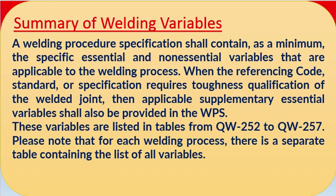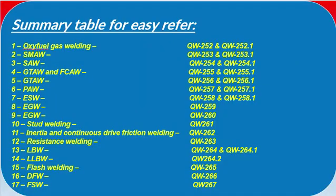You can see the summary table very clearly. For oxy-fuel gas welding it is QW-252 and QW-252.1; for SMAW it is QW-253 and QW-253.1; for SAW (submerged arc welding) it is QW-254 and QW-254.1. Each welding process — GTAW, PAW, ESW, EGW, stud welding — has different variable requirements.